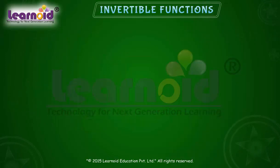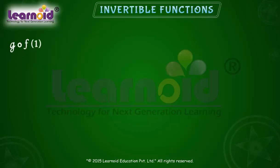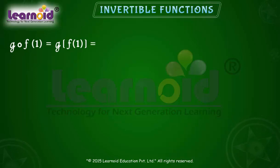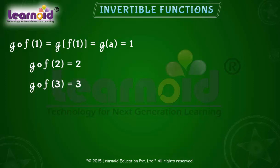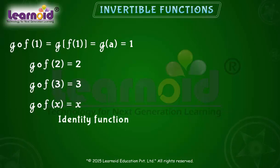Now let us examine gof and fog between such functions. Let us find gof(1): g(f(1)) = g(a) = 1. So gof(1) = 1. Similarly, gof(2) = 2 and gof(3) = 3. This means gof is equal to the identity function on X.